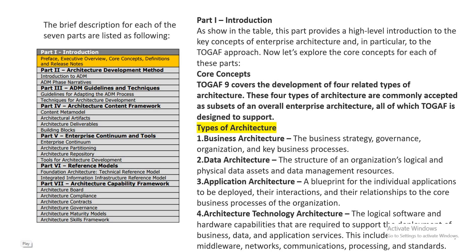The types of architecture: TOGAF covers four related types of architecture. One is business architecture, second is data architecture, third is application architecture, and fourth is technology architecture — which includes business strategy, governance, organization, and the key business processes to follow.